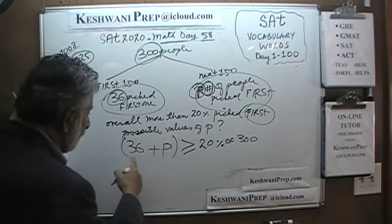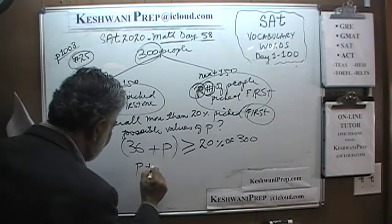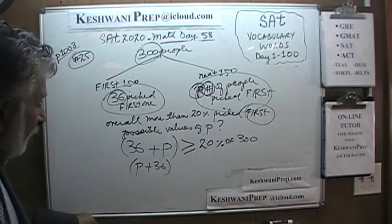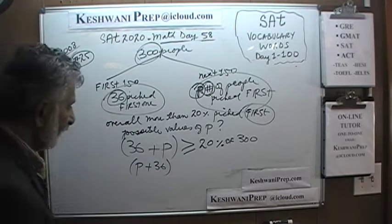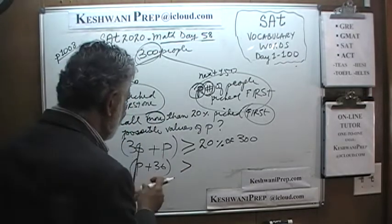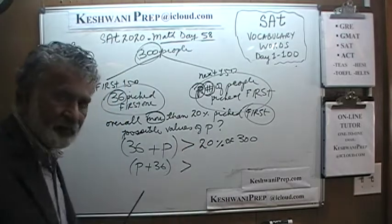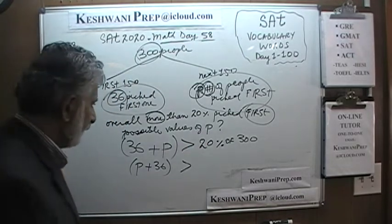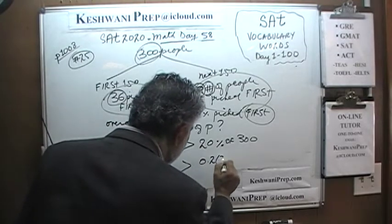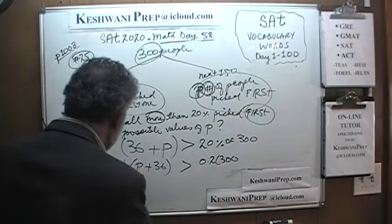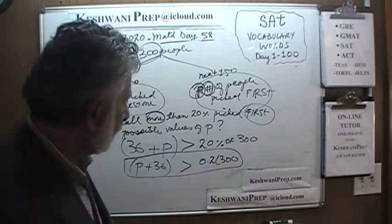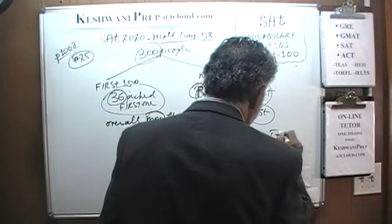The question asks for the possible values of P. We have 36 from the first group and P from the second, and that total is more than 20% of 300. So: P + 36 > 0.2 times 300. Our job is simply to pick the answer choice that matches that — and that is answer choice D.